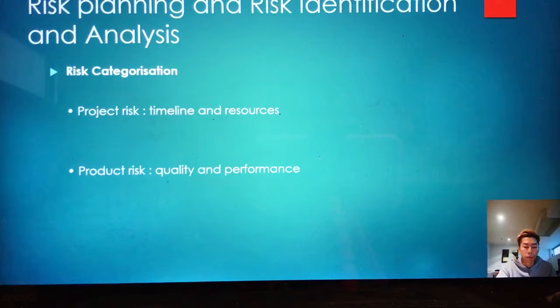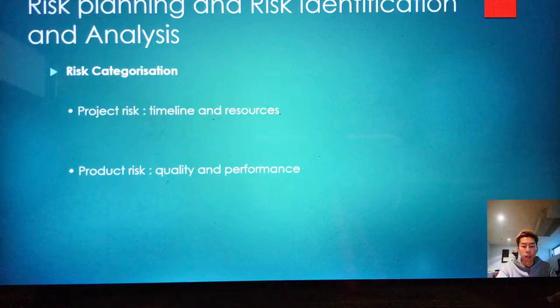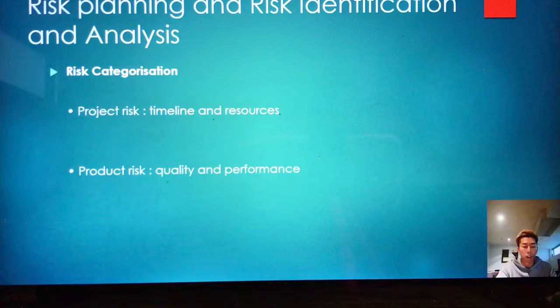At each stage of the project, the main factors can be detected as human factors and accidents. The second one is Product Risk: factors that may affect the quality and performance of the robot. For example, EV3 robot software and hardware issues. Product Risk can be identified as risk factors that affect the quality and performance of EV3 robots.